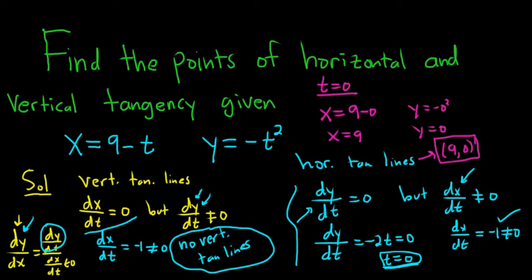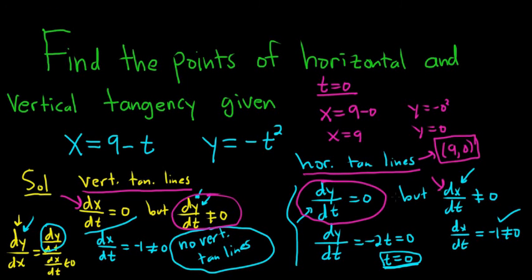So quick recap. When you're looking for vertical tangent lines, take dx/dt, set it equal to 0, solve, and just make sure this is satisfied. When you're looking for horizontal tangent lines, take dy/dt, set it equal to 0, but just make sure this is satisfied. That's it. I hope this was helpful.